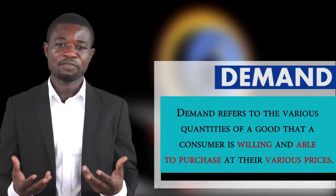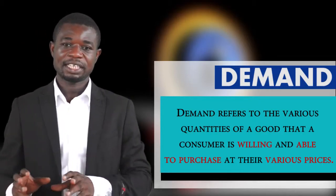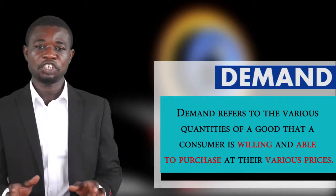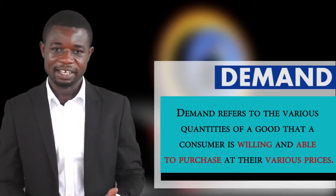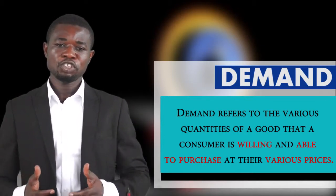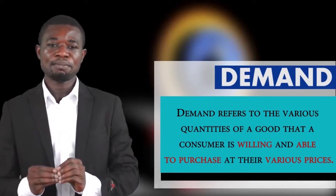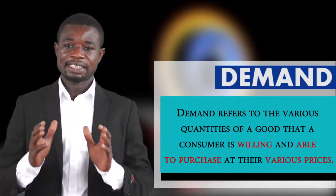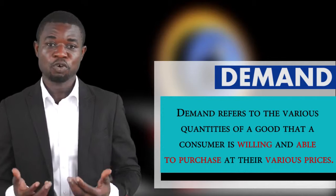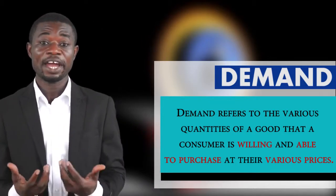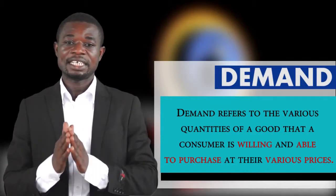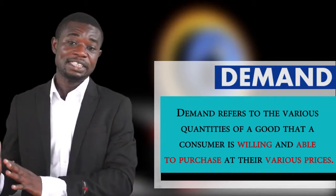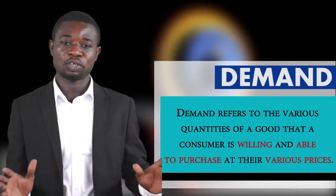When you look at the definition, there are some underlying key terms that must be present: the willingness, the desire, and the ability. When we talk about ability, we are talking about purchasing power. If you are willing to consume a commodity and you have the required income to buy it, then effective demand has taken place. If the willingness is not backed by purchasing power, then we don't have effective demand.